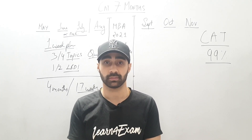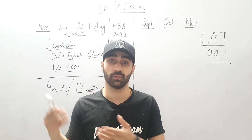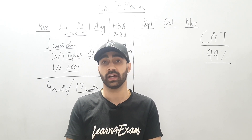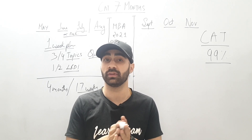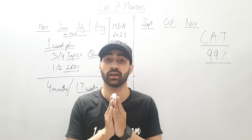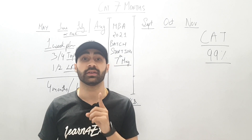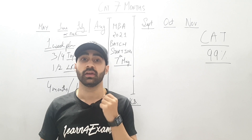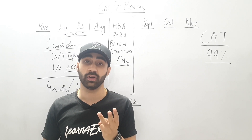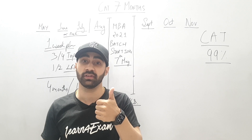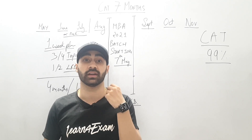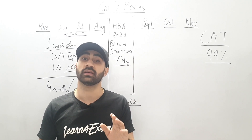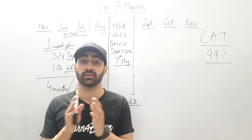If you are taking coaching, they will guide you. If you are preparing yourself, make sure you start with arithmetic — it's a very easy topic. First do ratio, then percentages, then profit and loss, then SI/CI, then averages, then alligation/mixture, then time speed distance, then time and work. That completes arithmetic.